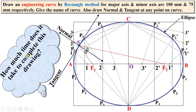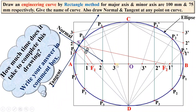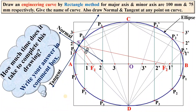Try to draw this same drawing with instruments in your sketchbook and write your answer for how long it took in the comment box. An important exam tip: in the examination, only the ellipse, normal, and tangent should be drawn dark; all remaining construction lines should be as light as possible. Thanks for watching — please press the like button to appreciate it.